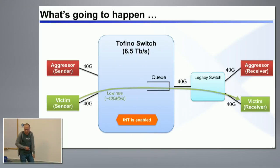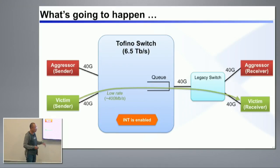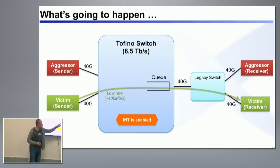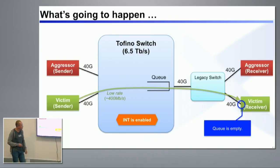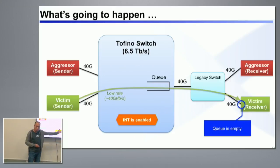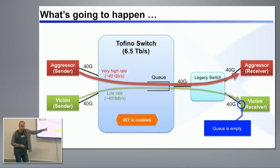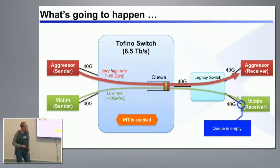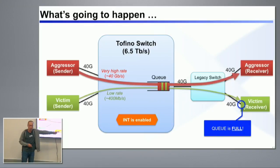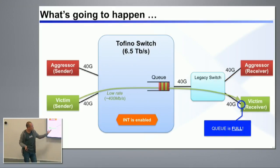When only the victim flow is present, the queue will be empty — there's no oversubscription, one input and one output, and the victim rate is lower than the output bandwidth. Every packet will report a zero-sized queue. But when the aggressor kicks in, there's oversubscription: two senders competing for one full-line-rate output port, causing the queue to build up. You will immediately detect that the queue is full. When the aggressor traffic goes away, the queue will drain, and you'll see the queue return to its normal empty state.